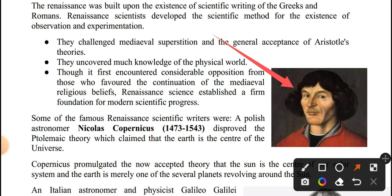The Polish astronomer Nicolaus Copernicus disproved the Ptolemaic theory, which claimed that Earth is the center of the universe.